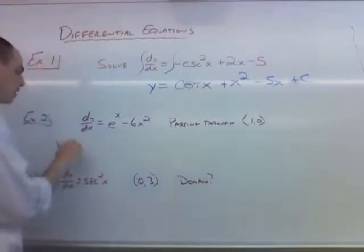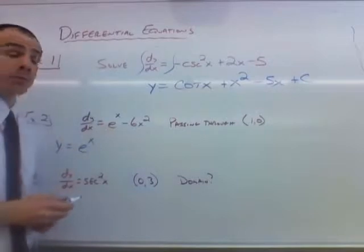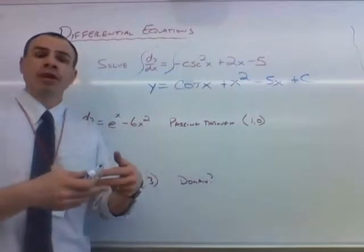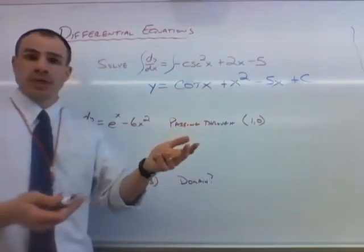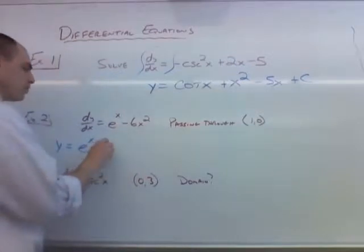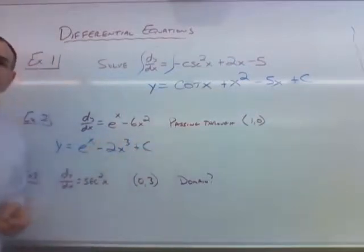So y will be equal to e's antiderivative is itself. And then 6x squared, that's going to become 6x cubed over 3. We add 1 to the exponent and divide by that number. And then the 6 and the 3 will simplify it to 2, so we have 2x cubed. And of course, we still have our plus c.